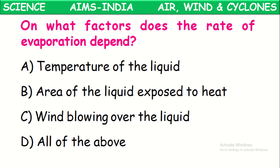Wind blowing over the liquid also affects the rate of evaporation. If wind blows faster, evaporation also will be faster. When water is poured on the floor, switching on a fan makes it evaporate at a faster rate than normal. So temperature, surface area, and wind are the three factors affecting rate of evaporation.